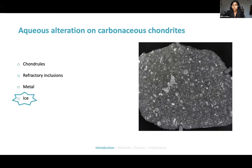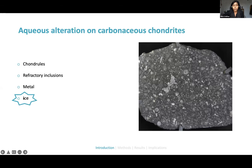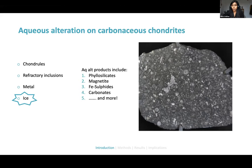When these chondrites accrete, they accrete with a variety of different components, including chondrules — these rounded molten silicate droplets — refractory inclusions, as well as metal in the matrix and ice. This accreted ice is really important because when it melts, it generates an aqueous fluid which then reacts with many of the components present in the chondrites.